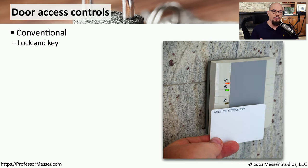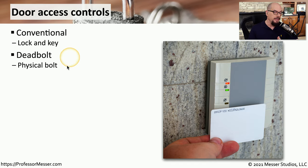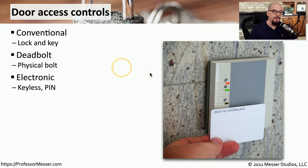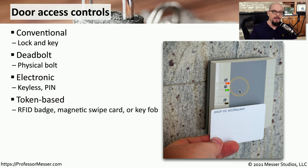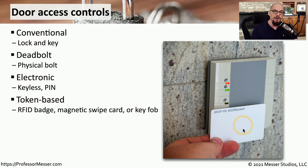There are many different ways to control access through a door. For example, a traditional lock and key is one of the most common and well-known ways of locking a facility. This door might include a deadbolt for additional security. If this is an office, you may be using an electronic lock — this could be a keyless lock or one that requires you to put in a personal identification number. There might also be locks based on a token, such as one associated with an RFID badge, a magnetic swipe card, or a key fob connected to your key ring.